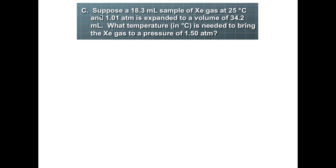Suppose we have 18.3 milliliters of xenon gas at 25 Celsius at 1.01 atmospheres. It's expanded to a volume of 34.2, so we have a change in volume. Right away, I know this is a change problem. What temperature, and they want it in Celsius, is needed to bring the xenon gas to a pressure of 1.5 atmospheres? Start listing your information. Volume is 18.3 milliliters at this temperature of 25 Celsius, which is 298 Kelvin, and the pressure is 1.01 atmospheres.